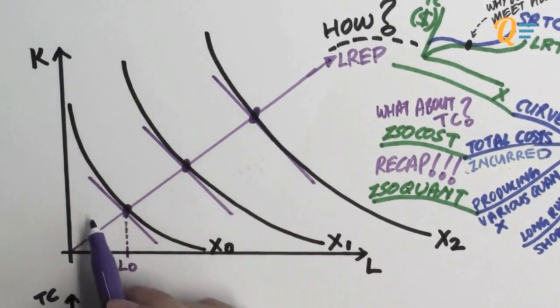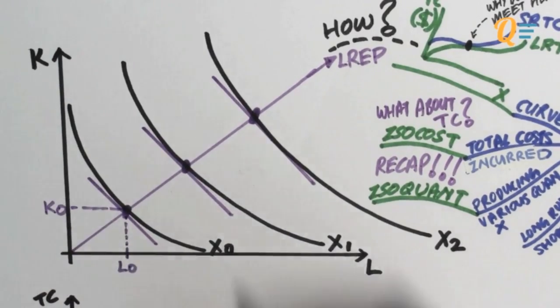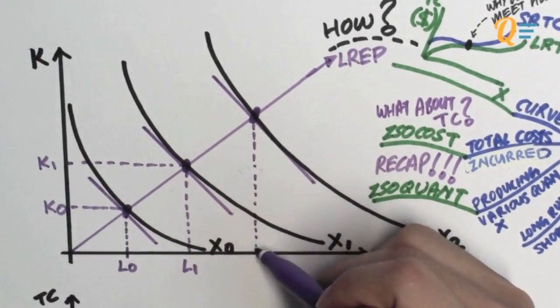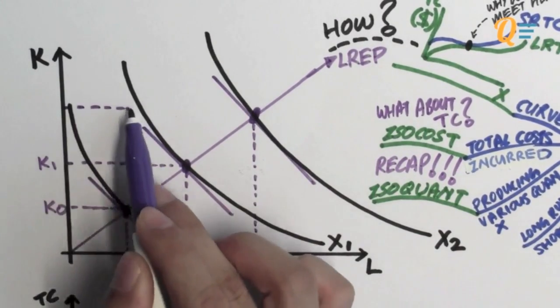So just to be a little bit meticulous, to produce X naught the firm is going to need L naught amount of labor and K naught amount of capital. To produce X1 it's going to need L1 amount of labor, K1 amount of capital. To produce X2 it needs L2 amount of labor and K2 amount of capital.